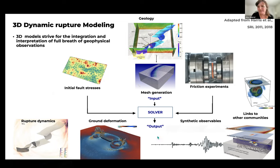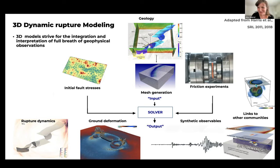These model outputs can also link to other communities. For example, they can be used to understand tsunami generation by coupling to tsunami modeling. Here's an example of not only the seismic wavefield but also the acoustic signature — this is a model of a local magnitude 1.8 induced earthquake in Helsinki causing noise disturbance, which is interesting as an example of linking to the acoustic community.